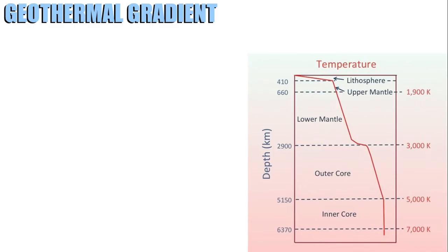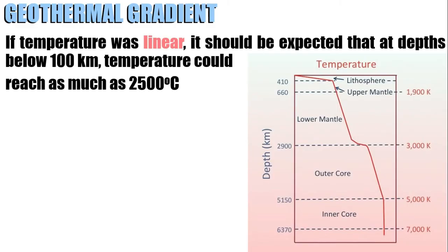What happens if it is linear? If temperature was linear, it should be expected that at depths below 100 kilometers, temperature could reach as much as 2,500 degrees Celsius. This would cause partial melting of rocks.